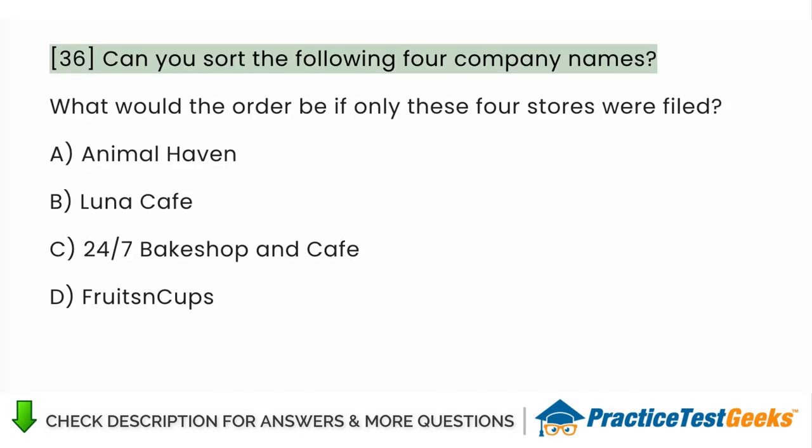Can you sort the following four company names? What would the order be if only these four stores were filed? A. Animal Haven B. Luna Cafe C. 24-7 Bake Shop and Cafe D. Fruits and Cups